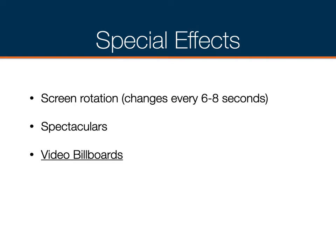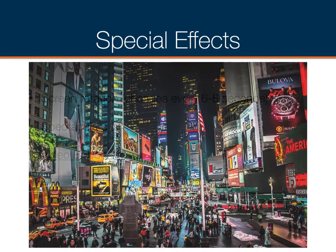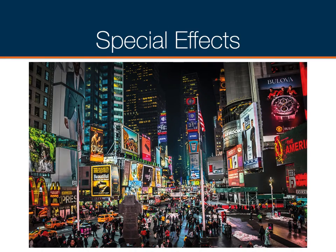Other kinds of special effects include screen rotations. You see these a lot on freeways around Southern California — generally now digital billboards, though they used to be mechanical. A new ad comes up every six to eight seconds, and they may have four or five in the rotation before they start to repeat. 'Spectaculars' is the traditional term for big lighted displays and billboards. Here's an example of Times Square in New York City — if you've never been, you've got to go sometime. It's so much fun and just electric to see all the spectacular light billboards, many of which are now video.